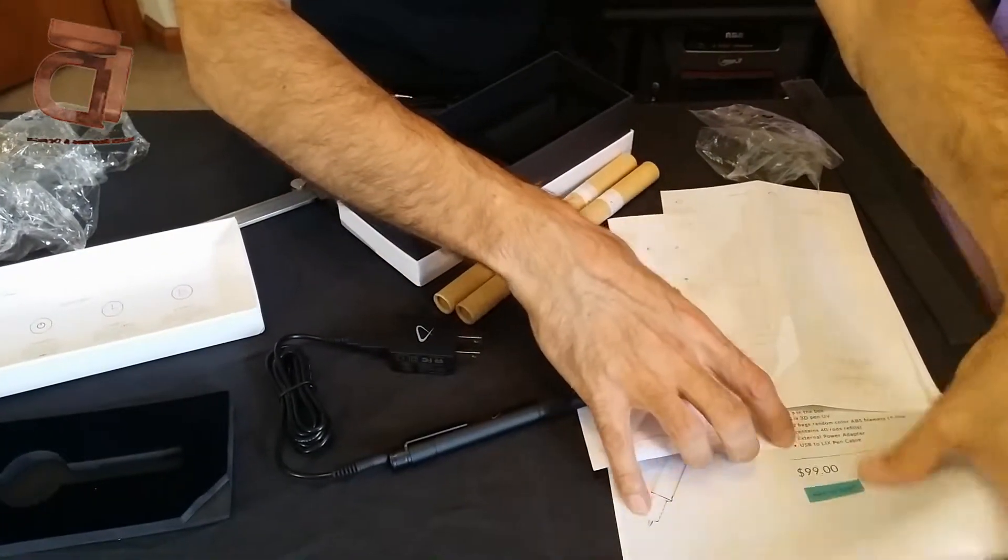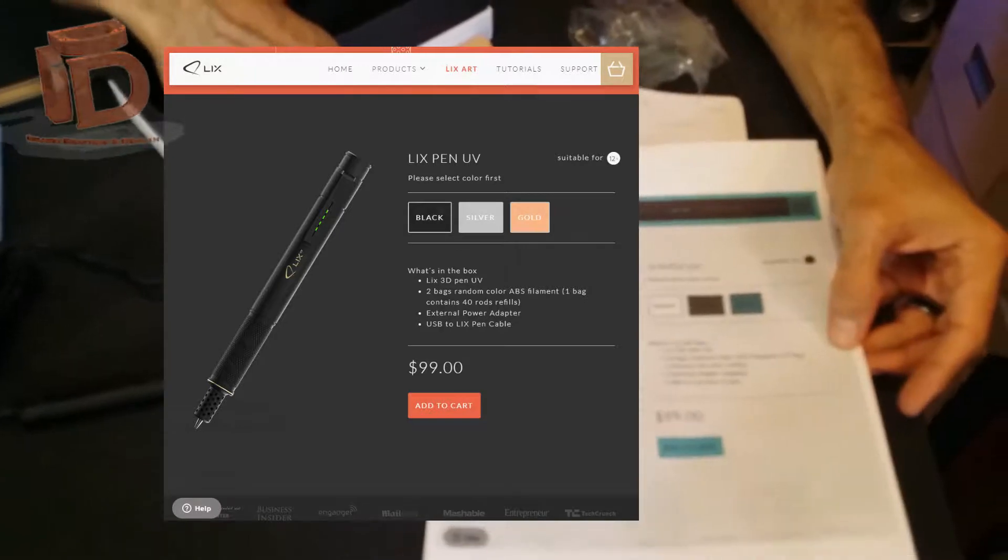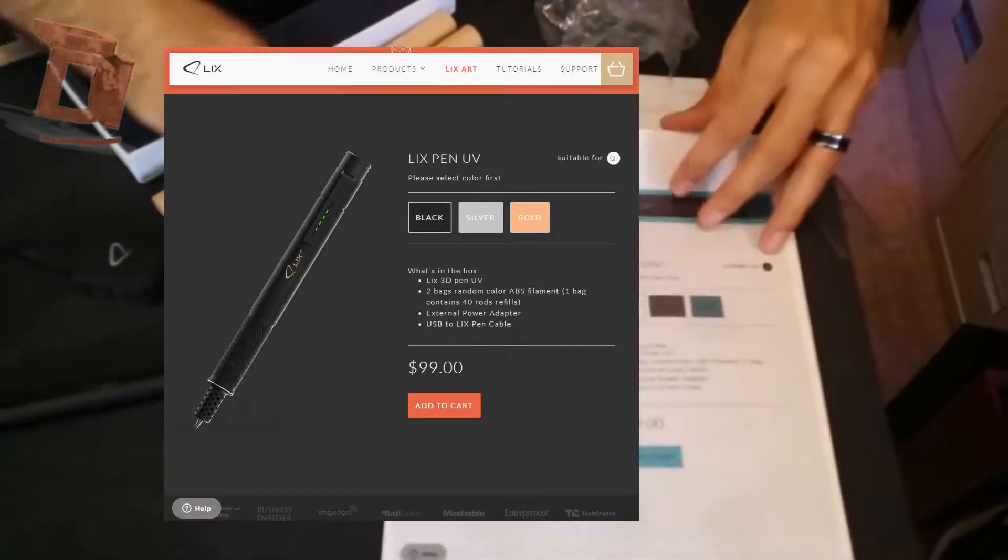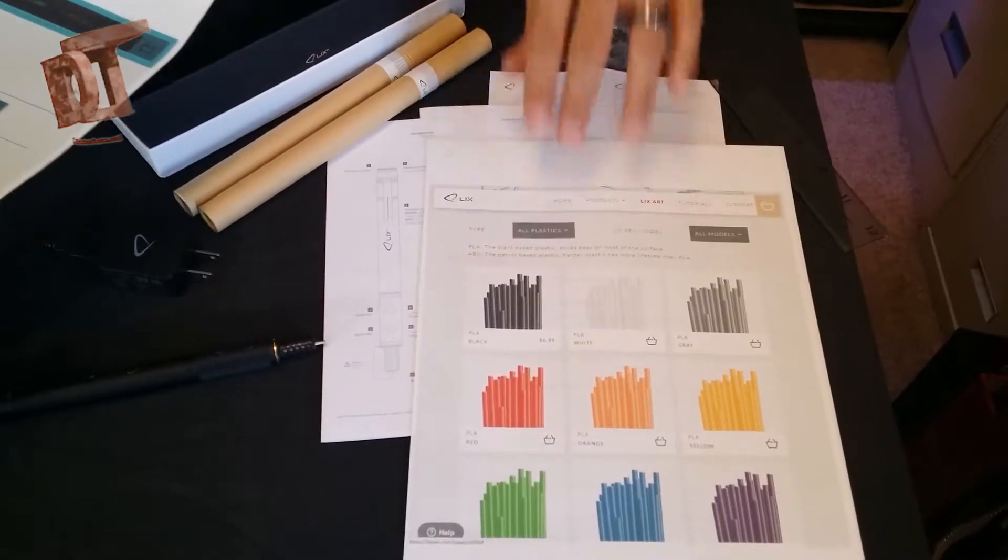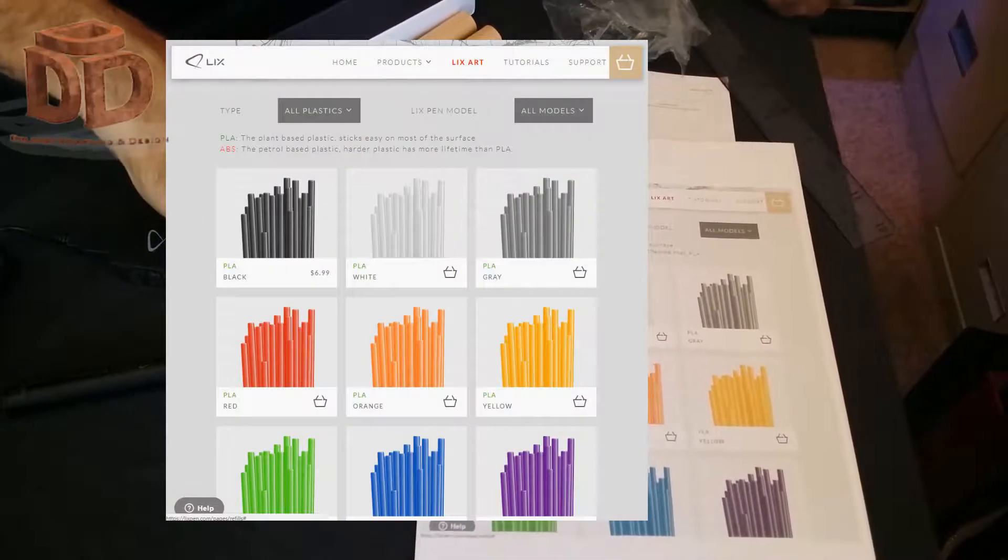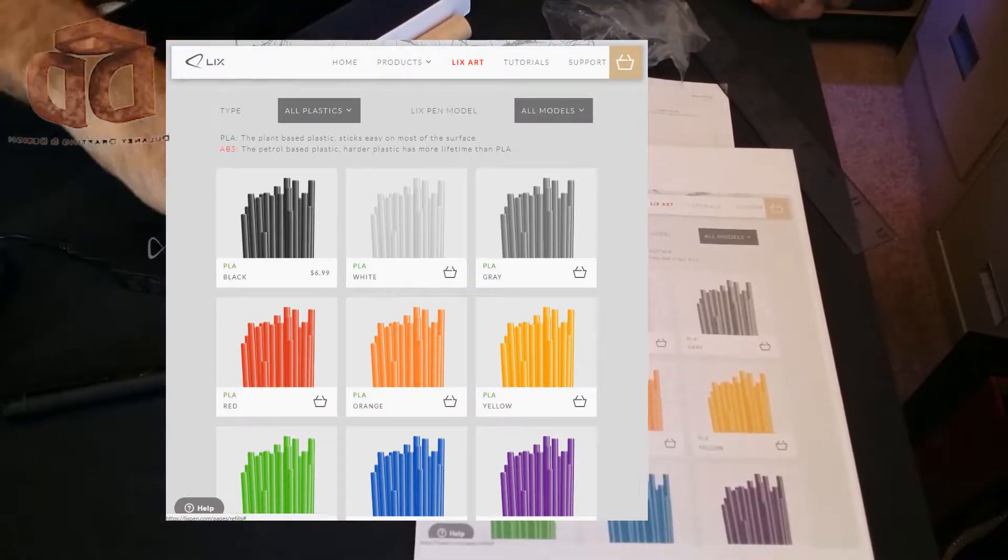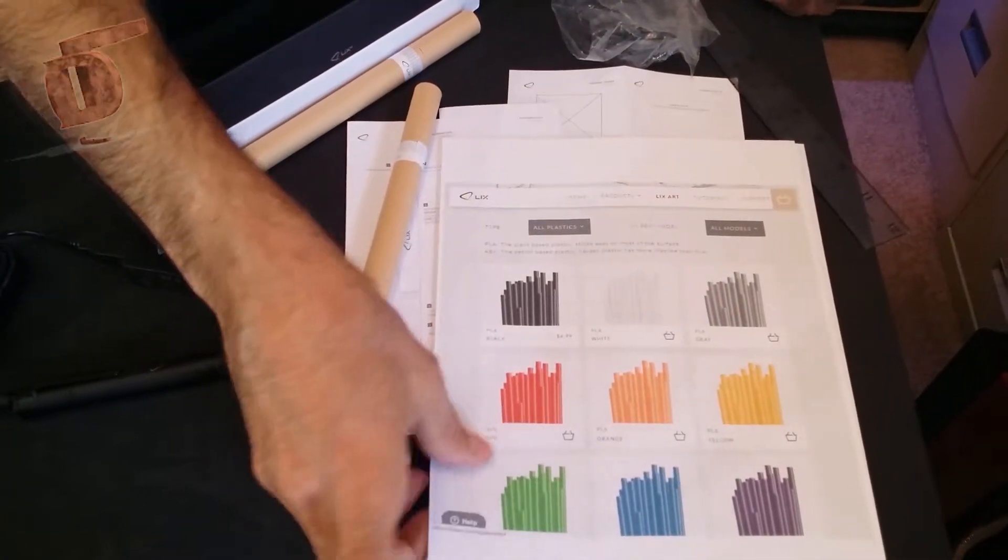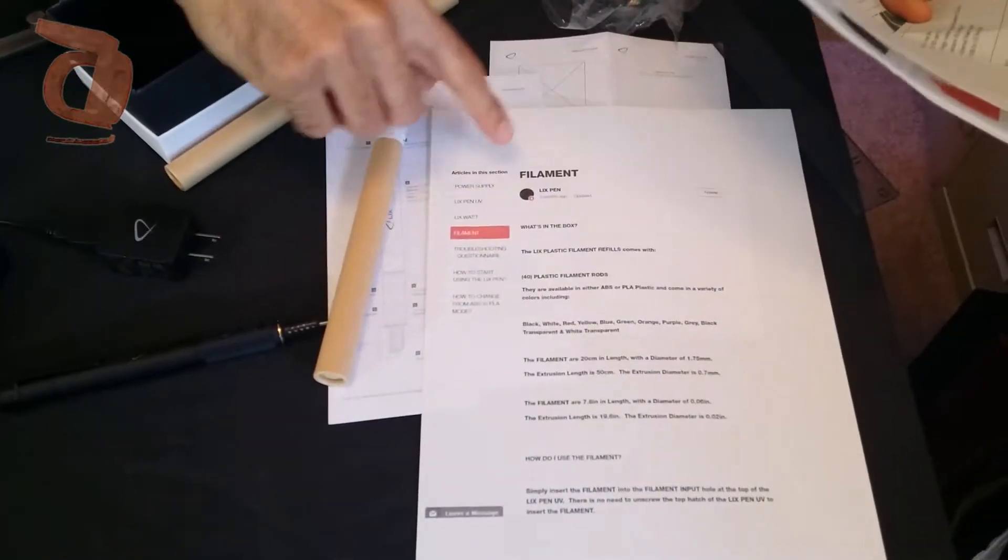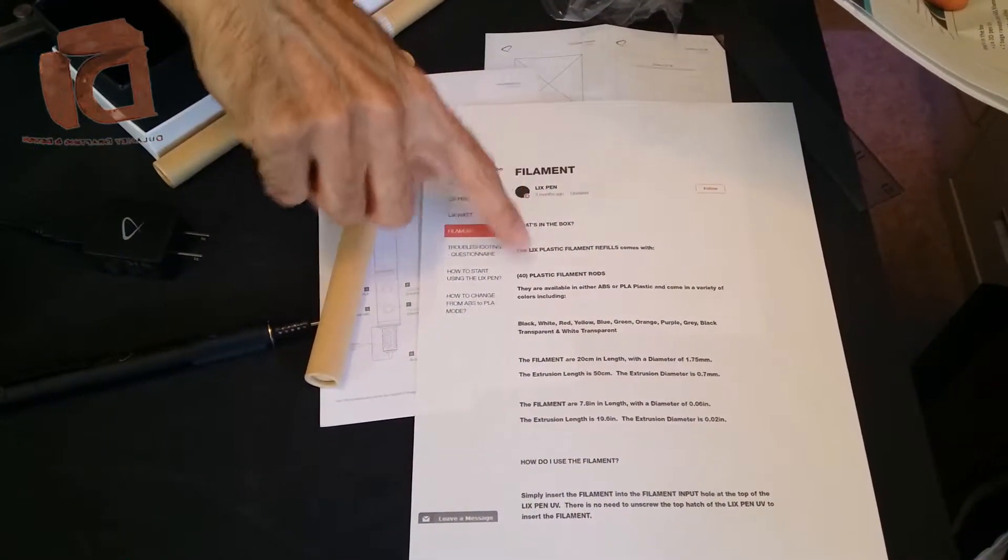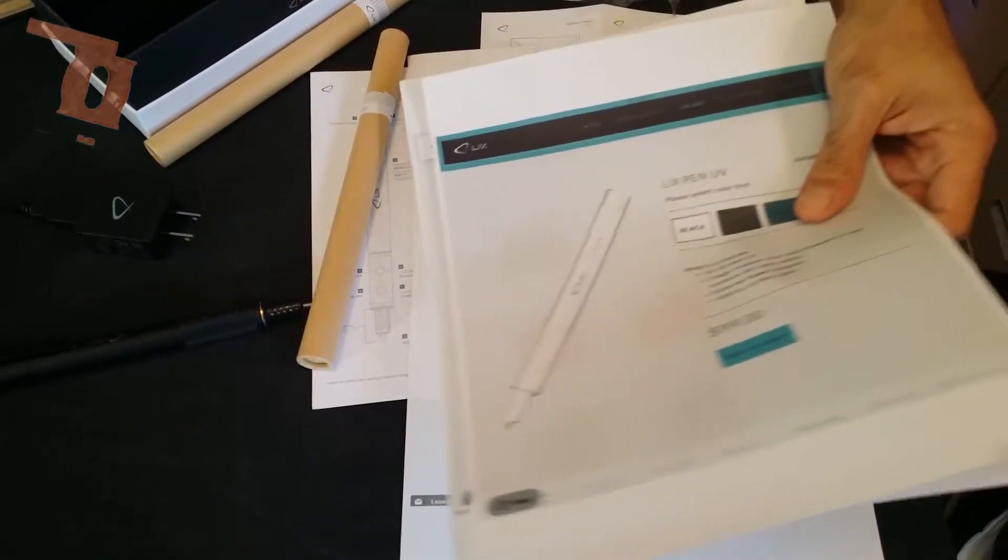You can see that the Lix Pen is available on lixpen.com for $99 and they have the filament $6.99 for one of these tubes. And they have it available in different colors, materials. And there's more information about the filament on their frequently asked questions on their lixpen.com website.